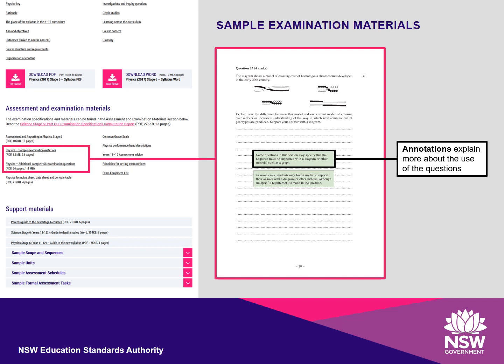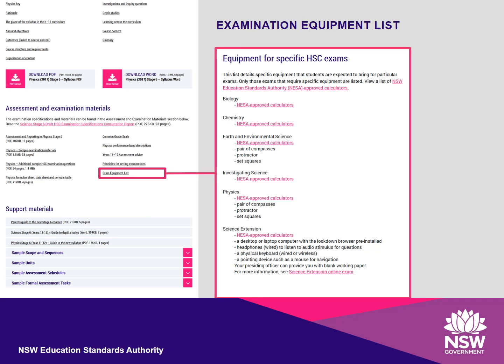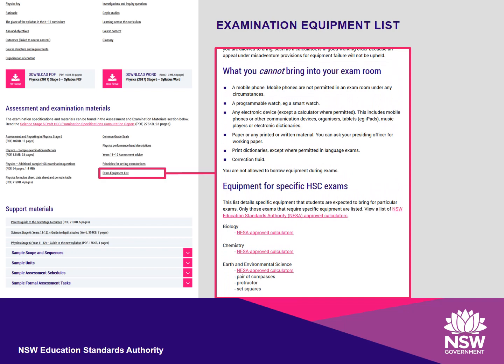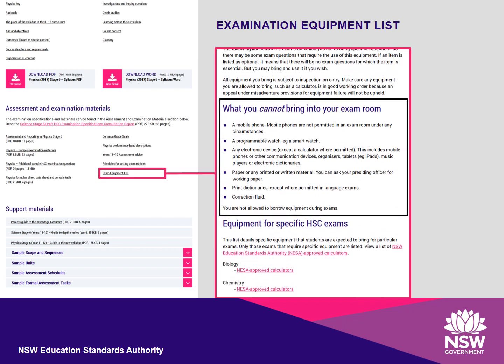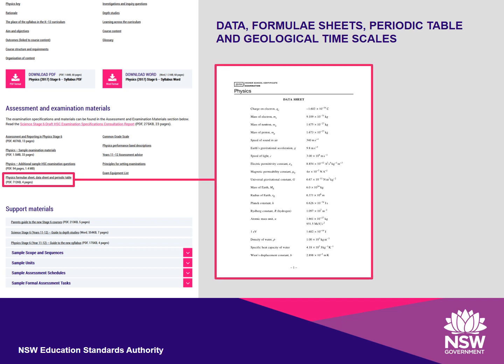It is also important to note that student responses are not limited by the number of lines provided. Students are able to ask for more paper if they need it. There is an additional package of sample questions, marking guidelines, sample answers and syllabus mapping. Students need to be aware of the equipment that they require for the exam, and there is a list that also specifies what students cannot bring into the exam. Relevant data, formulae sheets and the periodic table are provided for chemistry and physics students. A geological timescale is provided for earth and environmental science students. These are found under the sample examination materials located on each course page. Any other data or formula that is required to respond to a specific question will be provided in that exam question.